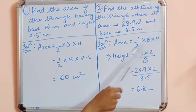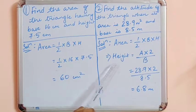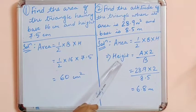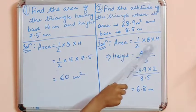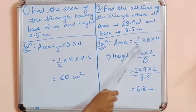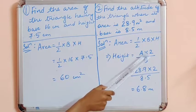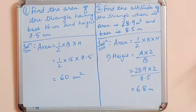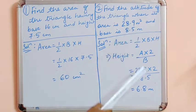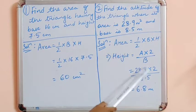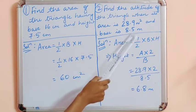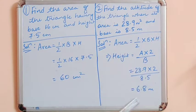In order to calculate height, we take it to the other side of the equal sign, making height the subject. So height is equal to area into 2 divided by base. This equals 28.9 into 2 divided by 8.5. So height is equal to 6.8 m.